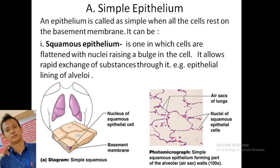Simple epithelium has a single cell layer resting on a basement membrane. It is divided into: squamous epithelium, which has flat cells with a flattened nucleus, allowing diffusion and filtration of substances — it lines alveoli of the lungs. You can see the basement membrane, air spaces of lungs, nucleus, and squamous cells in the diagram of simple squamous epithelium.